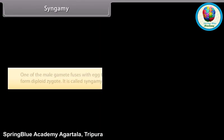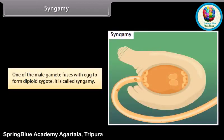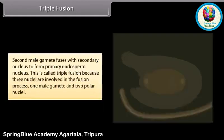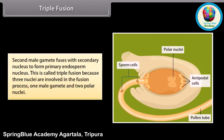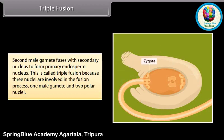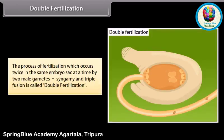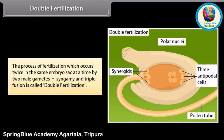Syngamy: one of the male gametes fuses with the egg to form a diploid zygote; this is called syngamy. Triple fusion: the second male gamete fuses with the secondary nucleus to form the primary endosperm nucleus; this is called triple fusion because three nuclei are involved — one male gamete and two polar nuclei. Double fertilization: the process of fertilization which occurs twice in the same embryo sac at the same time by two male gametes — syngamy and triple fusion together — is called double fertilization.